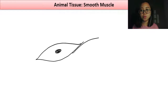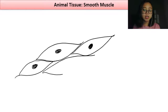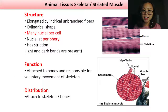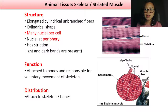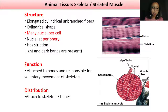Now for a quick drawing of smooth muscles — fairly simple, nothing complicated. Drawing about five cells to show how they look together, labeling the nucleus, and then we move on to the next type of muscle.